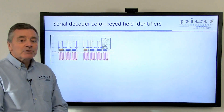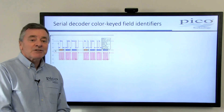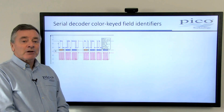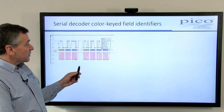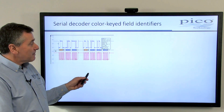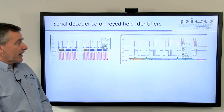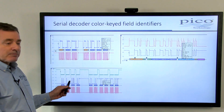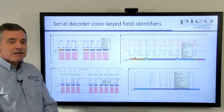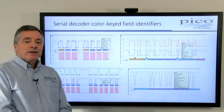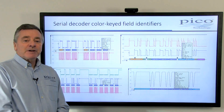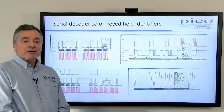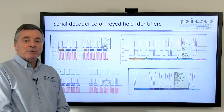Picoscope includes decoders for 16 different serial protocols. Shown here are I2C, CAN, SPI and SENT. In all cases, each field type has a unique color for ease of interpretation.